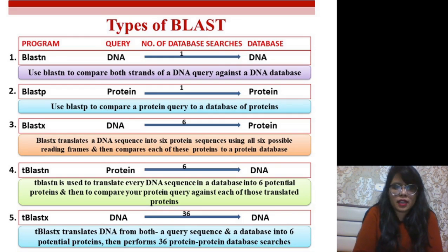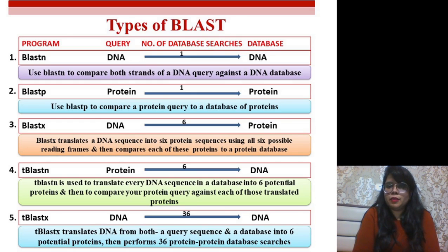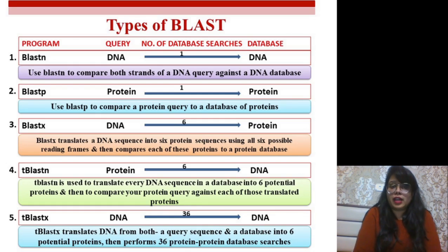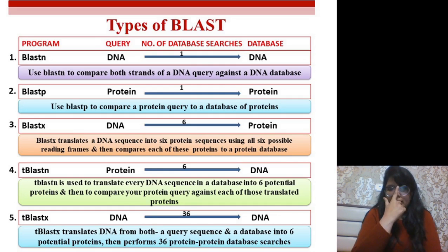tBLASTn — where 't' stands for translated — takes a protein sequence as the query, but translates the database sequences (which are in DNA) into all possible proteins across six reading frames. So here the database gets translated rather than the query. The number of searches is six. This is opposite to BLASTx, where the query was translated; in tBLASTn, the database is translated and the query is already a protein.